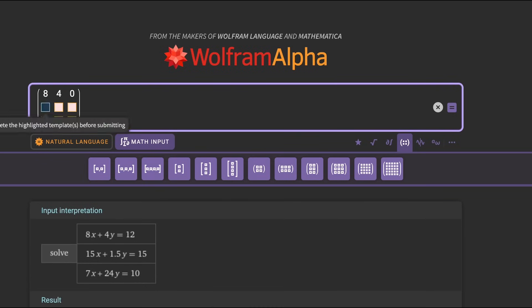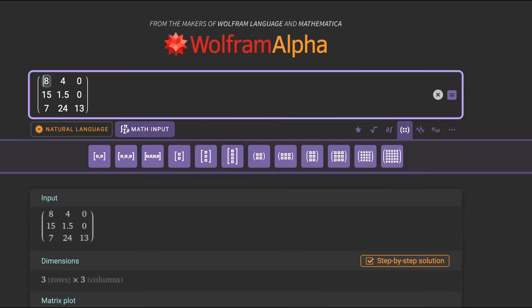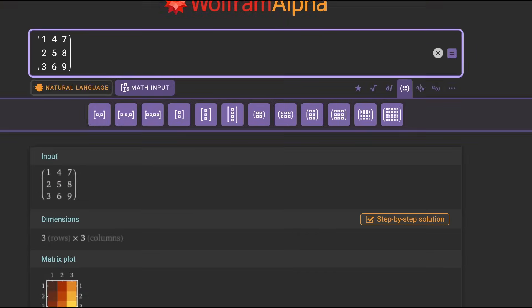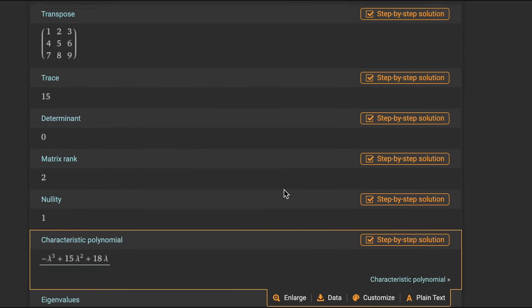When using Wolfram Alpha, just putting in the matrix will automatically give us the inverse as part of the standard information it gives for all matrices. See? Well, okay. Something's wrong. Wolfram Alpha didn't give us an inverse on this matrix.